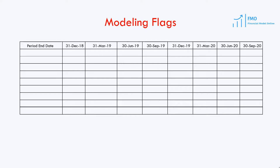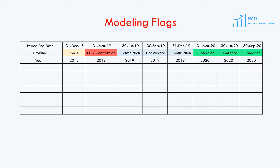Let's review how we would model a flag and what would be the benefit of a flag in the financial model. Here we have an excerpt from our model. On top we have the end of quarter dates, then we have the timeline, and finally the year. Assume that the revenue in our model should be 100. The question is how we would model this revenue number of 100. On top we have the timeline, and in the row below the timeline, our numbers should tell us the same story. This means we cannot have 100 in the cells under the construction period, because during construction our renewable energy project is not operational yet.